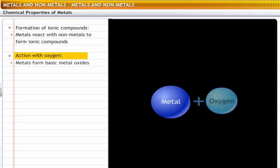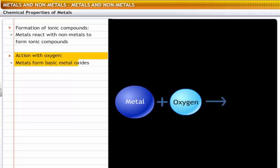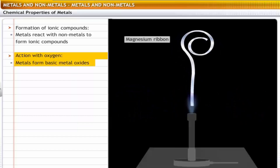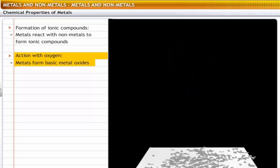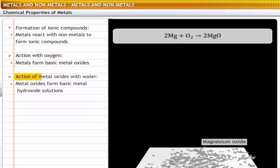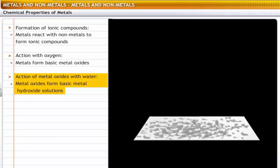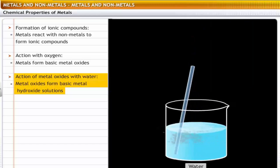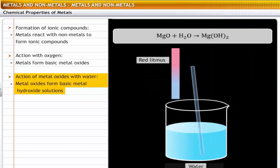Action of metals with oxygen: metals burn in the presence of oxygen to form metal oxides which are basic in nature. For example, a magnesium ribbon burns in oxygen to form magnesium oxide. Action of metal oxides with water: metal oxides dissolve in water to form basic metal hydroxide solutions. For example, magnesium oxide dissolves in water to form a strong basic solution of magnesium hydroxide.